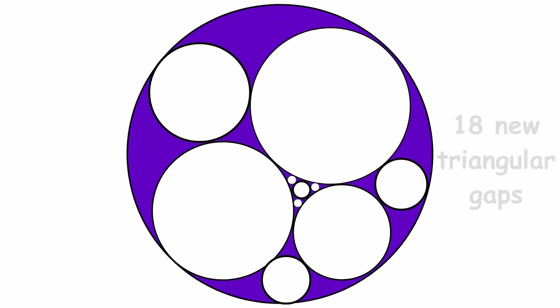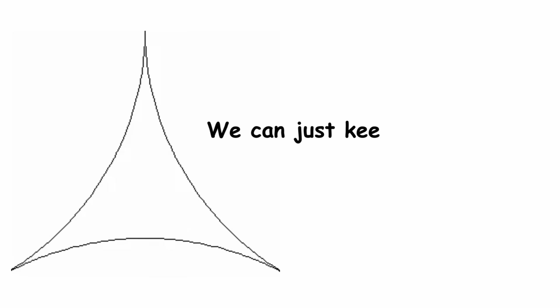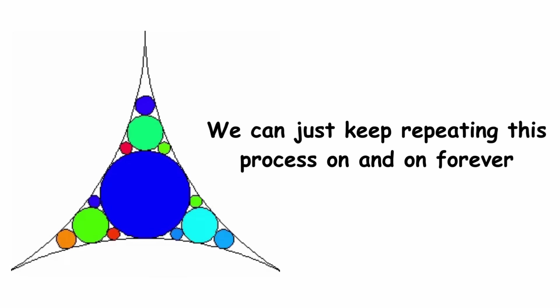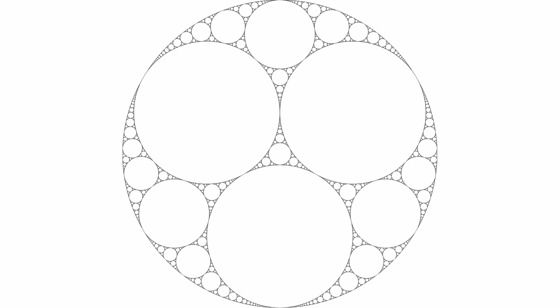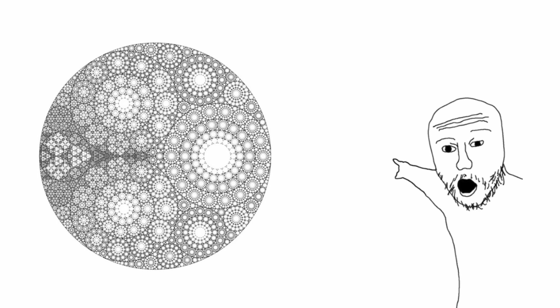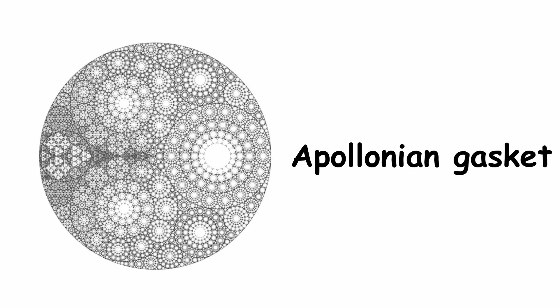Once we are done, we have created 18 new triangular gaps, which we can fill with tangent circles as well. We can just keep repeating this process on and on forever. And in the limit, we get an infinitely detailed shape, a fractal. This particular fractal is called the Apollonian gasket.